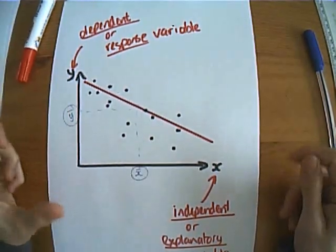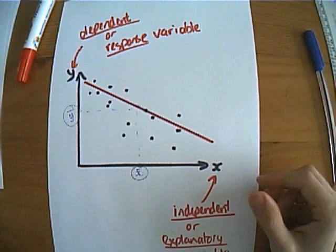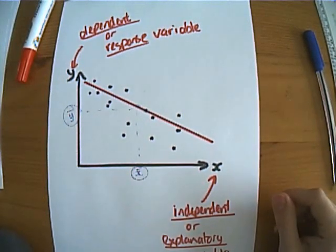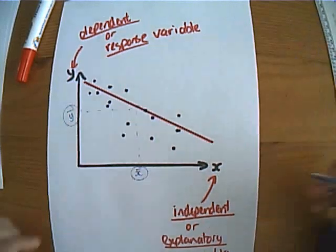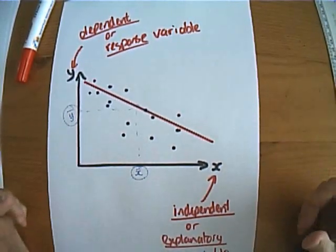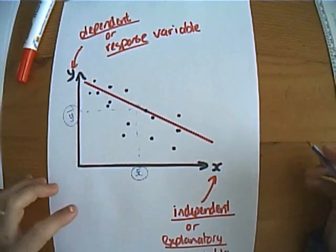The method we're going to use to come up with an even better line of best fit is what we call least squares regression and basically this is what we're going to try and do. By the way, you don't need to be able to explain this in great detail in the exam but it would help you to understand where it's coming from.